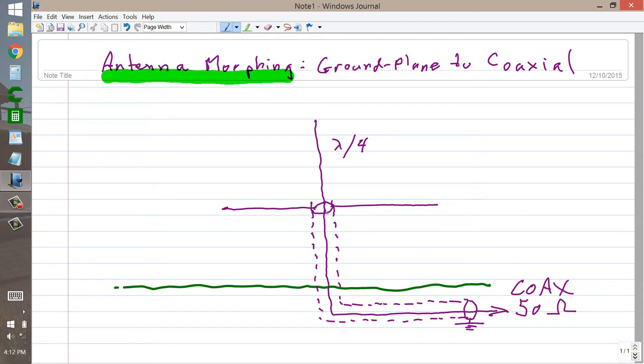I'm only showing two of them here for simplicity. The angle between the vertical element and the radials is 90 degrees so that the radials themselves are horizontal.